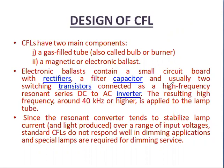CFLs mainly have two components: one is a gas-filled tube, also called a bulb or burner, and the second is a magnetic or electronic ballast. The electronic ballast contains a small circuit board with rectifiers, a filter capacitor, and usually two switching transistors connected as a high-frequency resonant series DC-to-AC inverter.